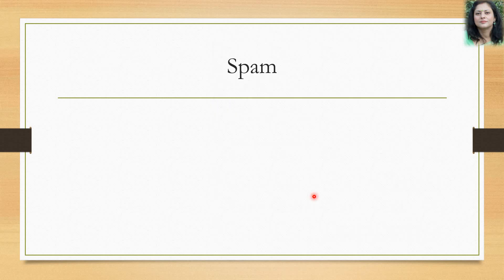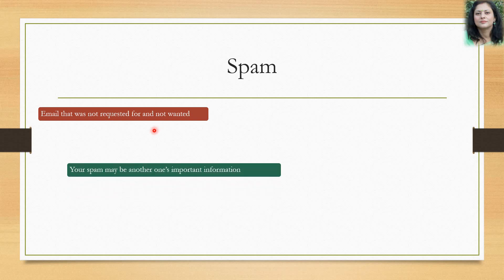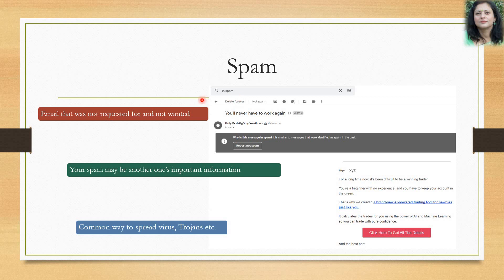Spam mostly comes through email. Your email server creates a special spam folder where messages you did not request or do not want are placed. Be careful, as many important messages also go into the spam folder, so check it from time to time and delete unwanted messages. Spam is a very common way to spread viruses and trojans — once you click those emails, virus or trojan horse programs enter your computer system. This is an example screenshot of a spam folder which you should delete instead of opening.